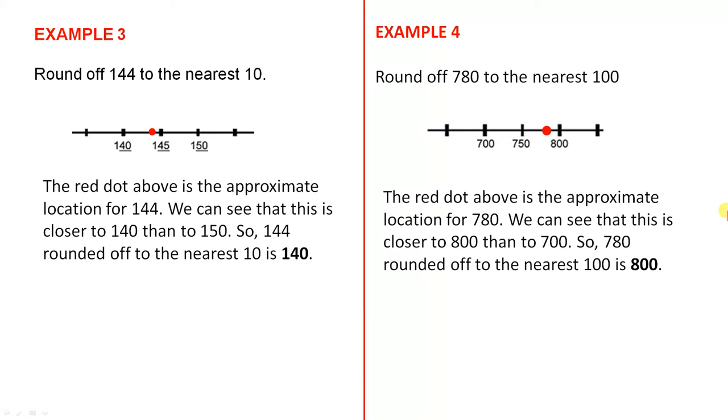Example 3, round off 144 to the nearest 10. The red dot above is the approximate location for 144. We can see that this is closer to 140 than to 150. So 144 rounded off to the nearest 10 is 140. That's fairly obvious, because from the red dot to there, that's pretty short. And from there to there, it's a little bit larger.